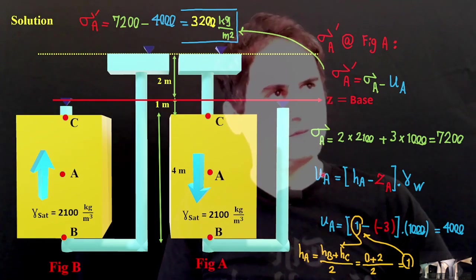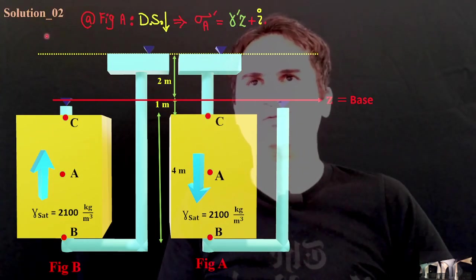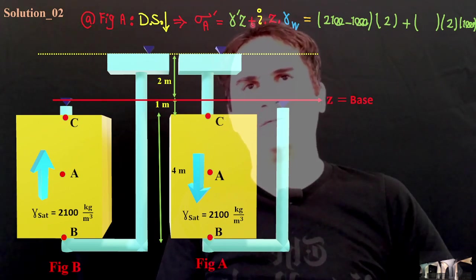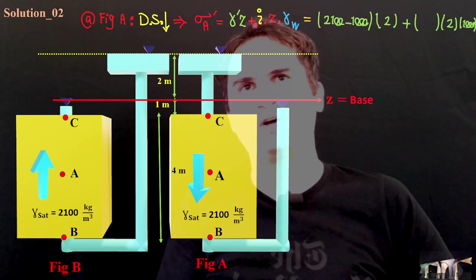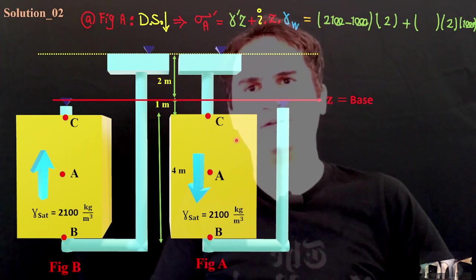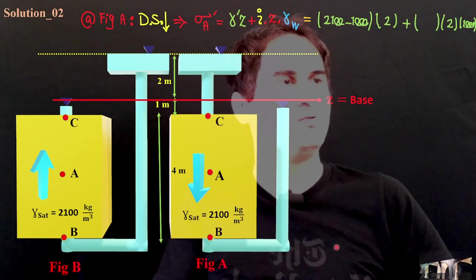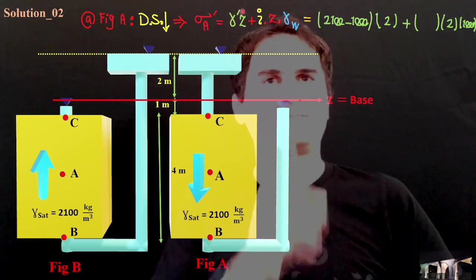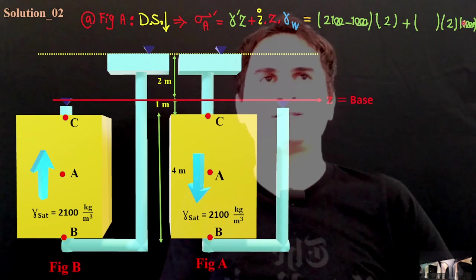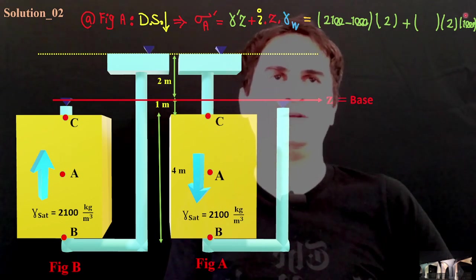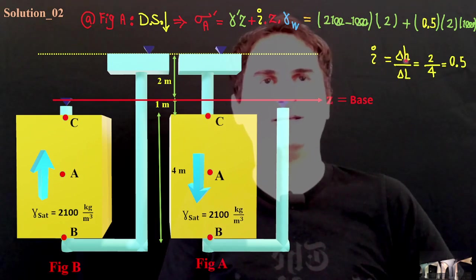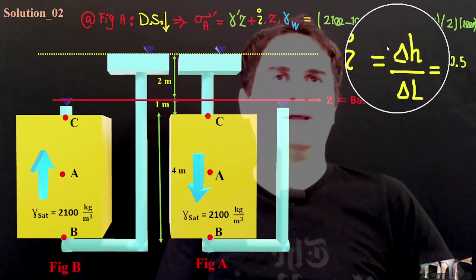We can also solve this problem in an easier approach, which is solution 2. We do know that's a downward seepage. And in downward seepage, effective stress is gamma prime times Z plus hydraulic gradient, plus I because that's the downward seepage. That's the plus IZ gamma W. That's gamma prime is 2,100 minus gamma W. This is gamma saturated. If you subtract gamma W of that, it just gives you gamma prime. And times the height or depth of soil, which is 2 meters, plus IZ gamma W. Z and gamma W is again 2 meters and 1,000. I is hydraulic gradient. Hydraulic gradient is the amount of head loss over the length.